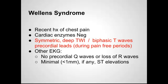Cardiac enzymes have to be negative — so no troponin leak. And the EKG shows symmetric deep T wave inversions or biphasic T waves in the precordial leads. Those findings are actually during the periods where they're chest pain free. The other criteria on the EKG is that you can't see any Q waves and no ST elevations.